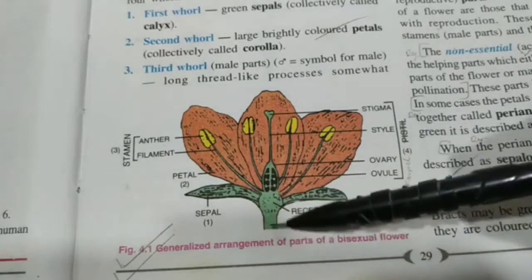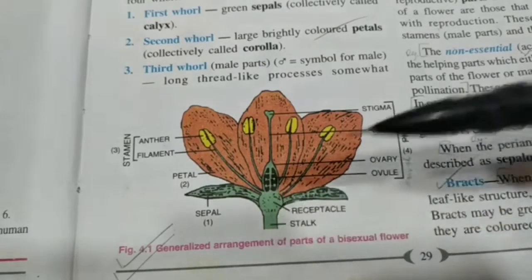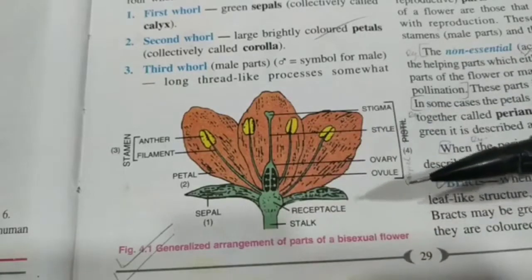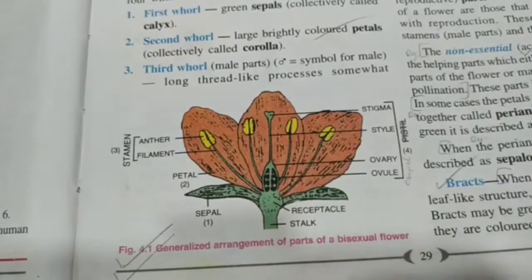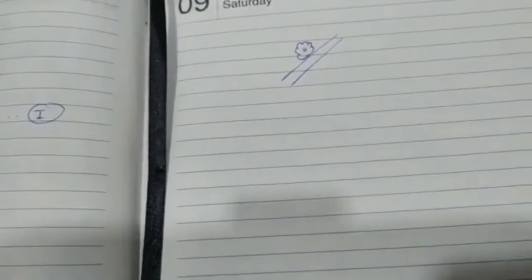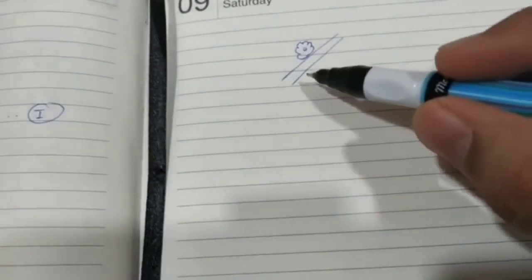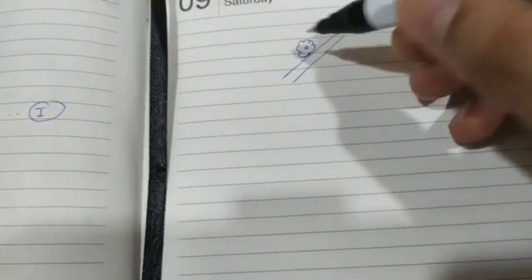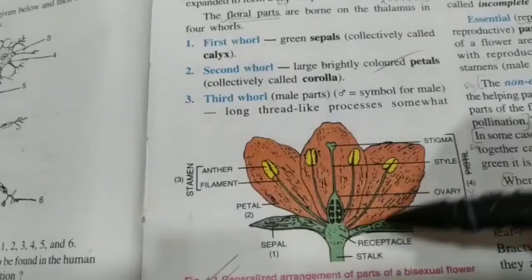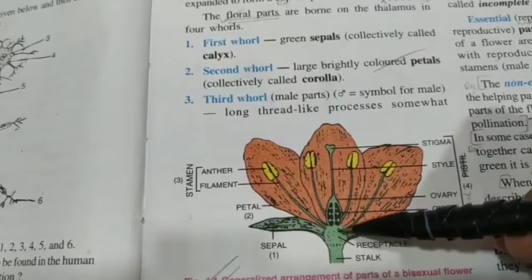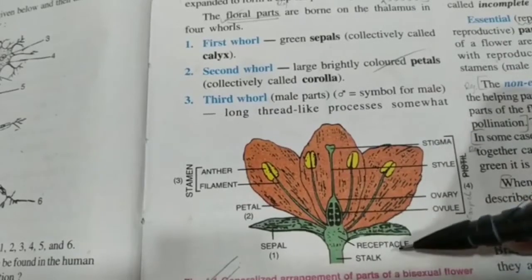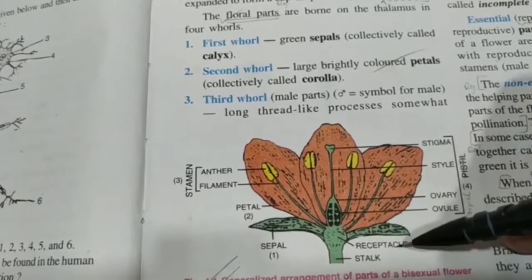This is called the stalk or the pedicel. Its function is to support the flower. Some flowers may be directly attached to the branch without a stalk — such flowers are called sessile flowers. The tip of the stalk is expanded into a cup-shaped receptacle, and there is a special name for this called the thalamus.